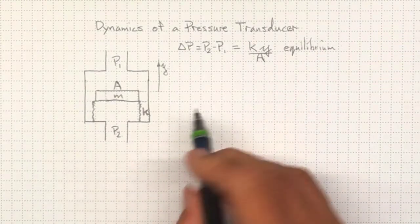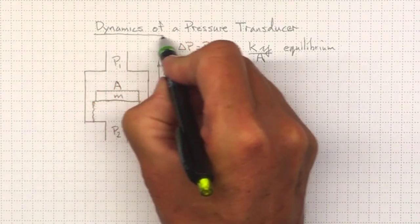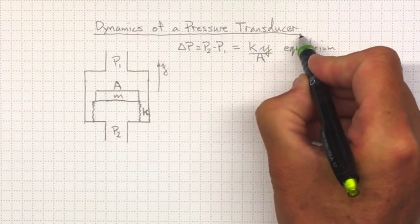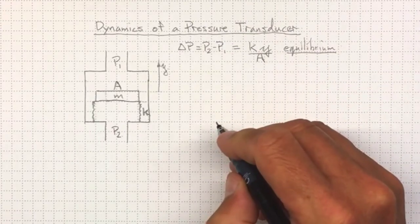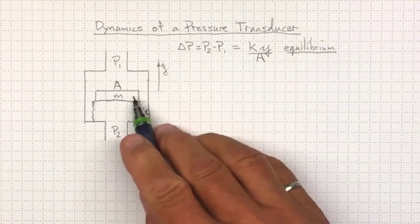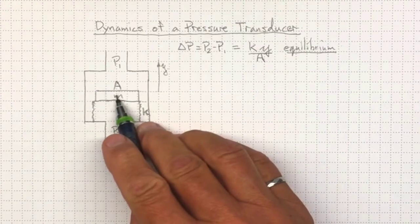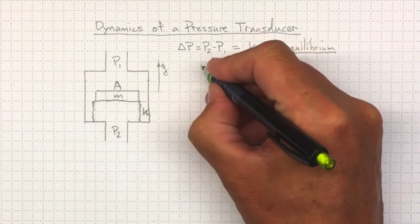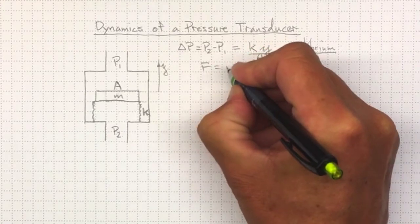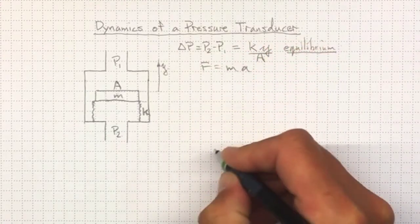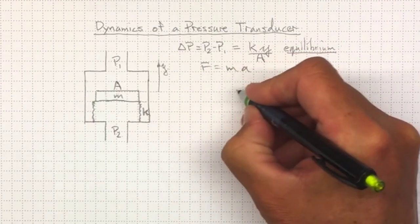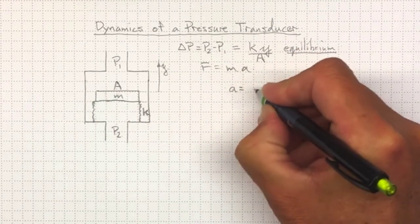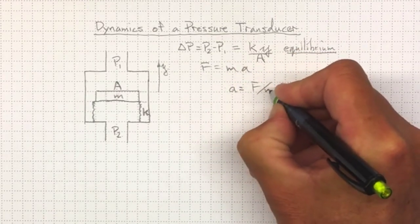We're much more interested in knowing the dynamics of this pressure transducer. How quickly is it going to get to this equilibrium state? And to do that, we'll have to look at that force balance and the acceleration of this mass. So we've got our usual F equals MA. We can always start there. Or if we turn that around the other way, we'll have A equal to F divided by M.